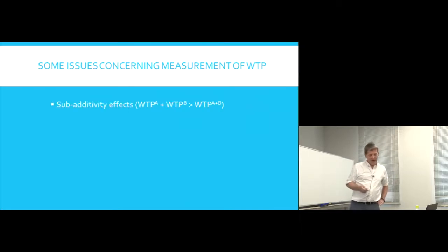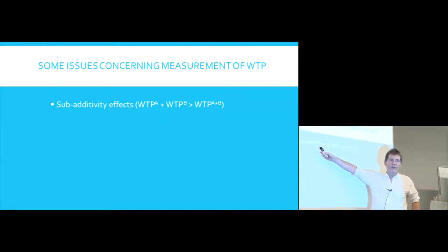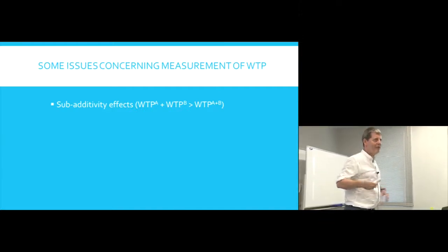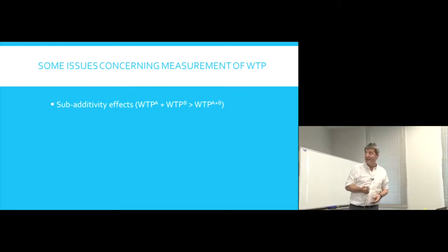One problem that's been observed is something called sub-additivity effects. People's willingness to pay for some service or good A plus their willingness to pay for good or service B typically is greater than their willingness to pay for A and B together. Now that's slightly unfortunate because it means the way you ask the questions is going to influence the answer you get, as of course, it's not surprising.